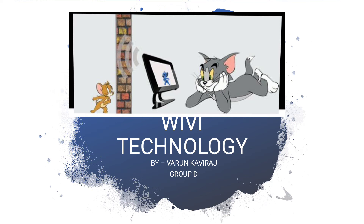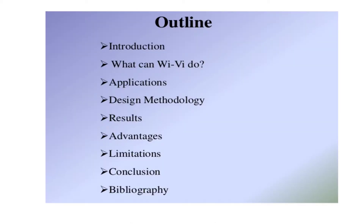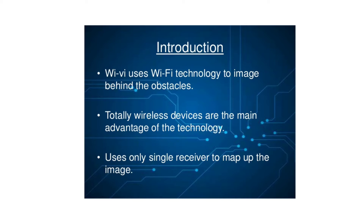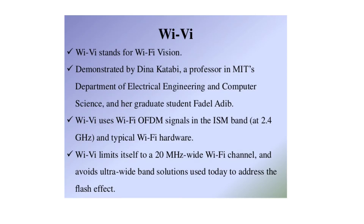This topic is Wi-Vi. Wi-Vi uses Wi-Fi technology to image behind obstacles. It is a totally wireless device, which is its main advantage. It uses only a single receiver to map up the image. Wi-Vi stands for Wi-Fi Vision.